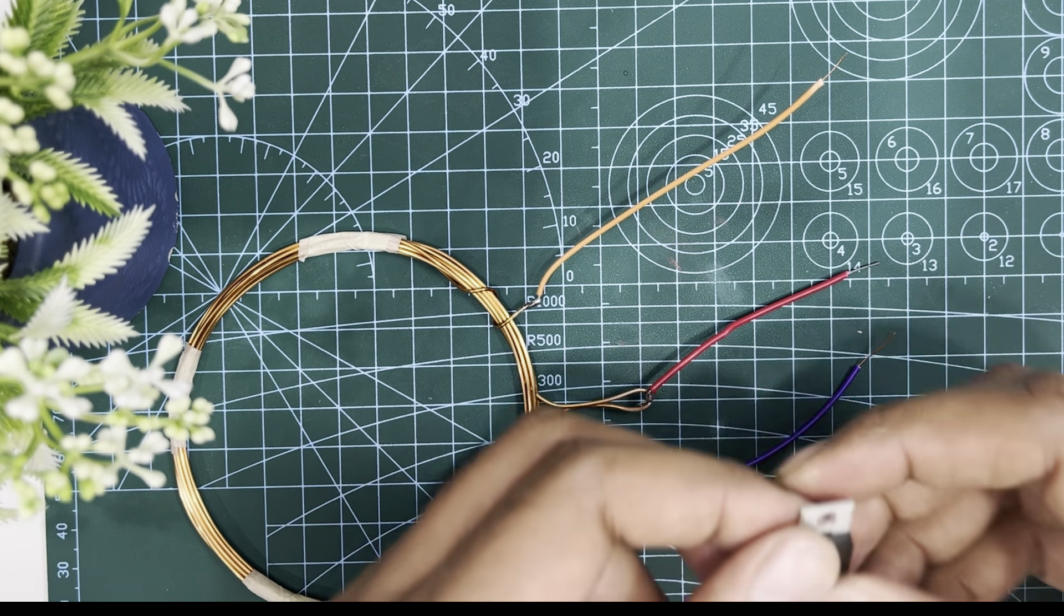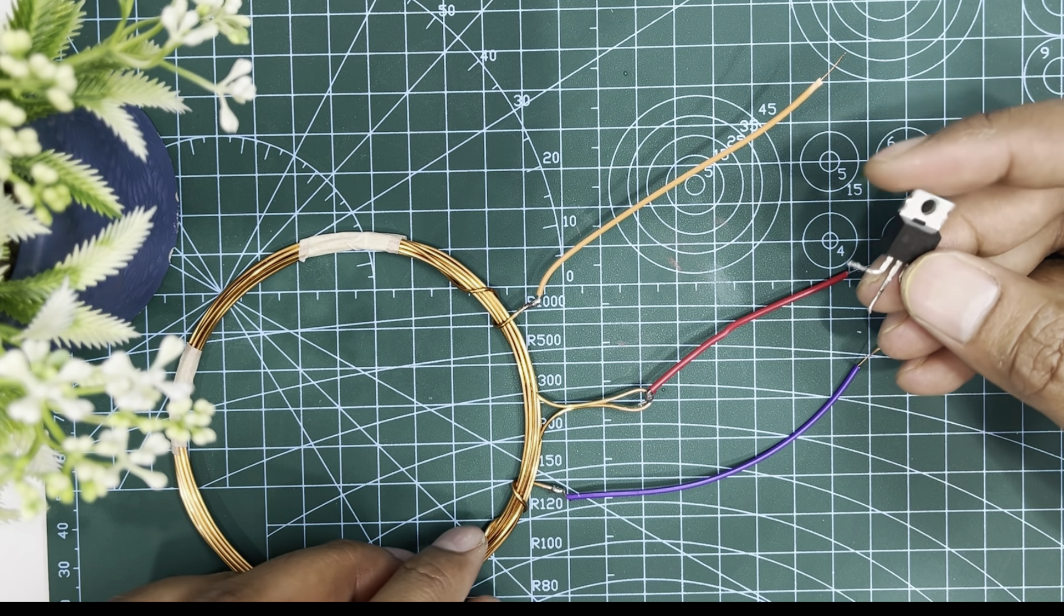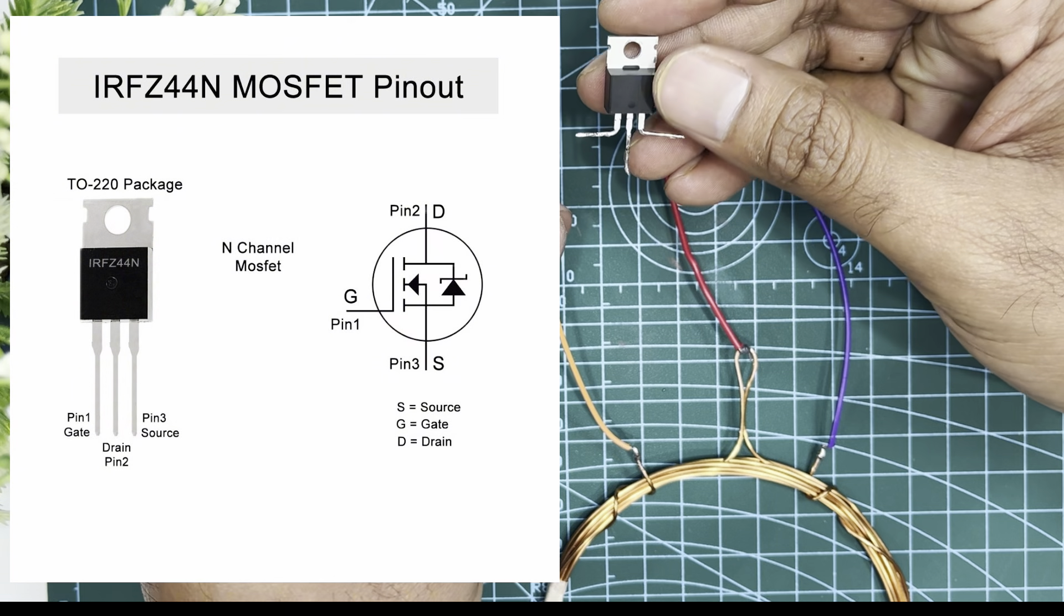The IRF-Z44N MOSFET transistor consists of 3 pins: gate, drain, and source.